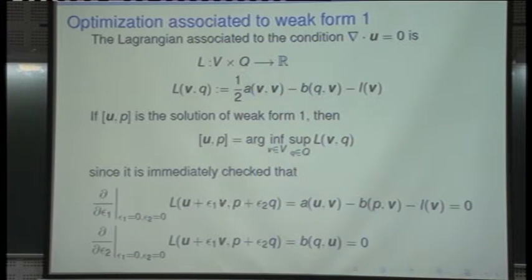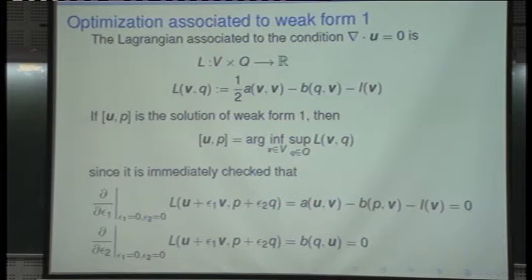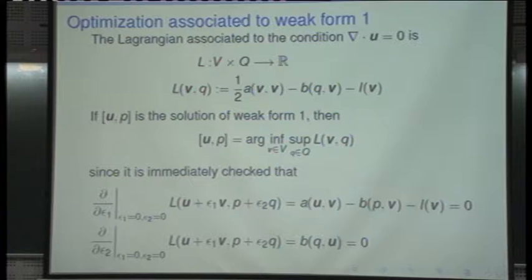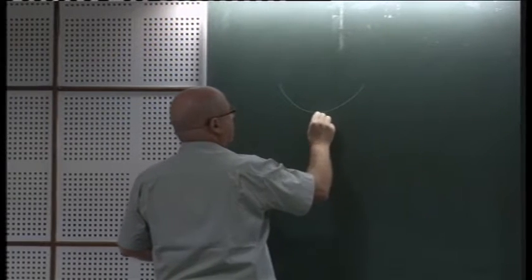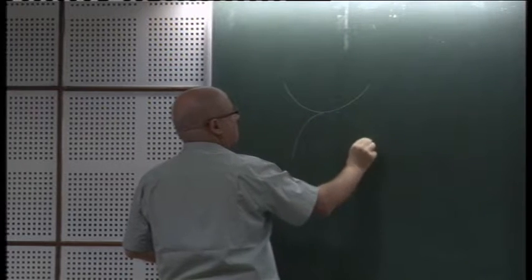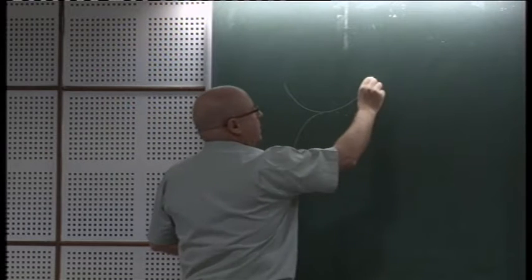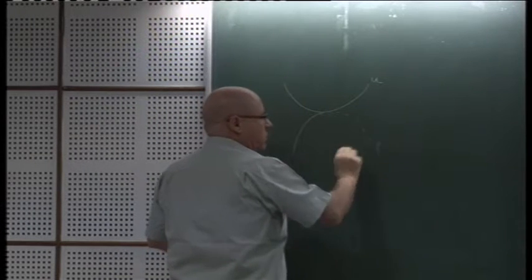What about the pressure? The Lagrangian is linear in pressure, so if we take second derivatives with respect to pressure, that's going to be zero. So we have a subtle point: you have a minimum in one direction and a maximum in the other. That would be a minimum in u and a maximum in p. But the Lagrangian is not definite — we don't have a second derivative that is negative in the p direction; we have a second derivative that is zero in the p direction.